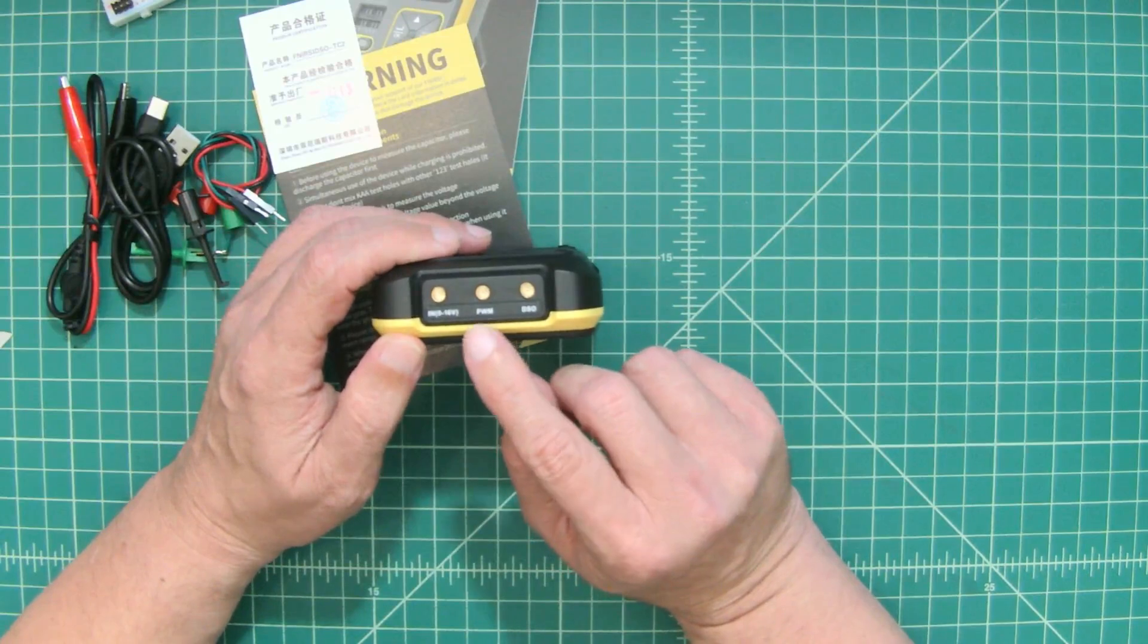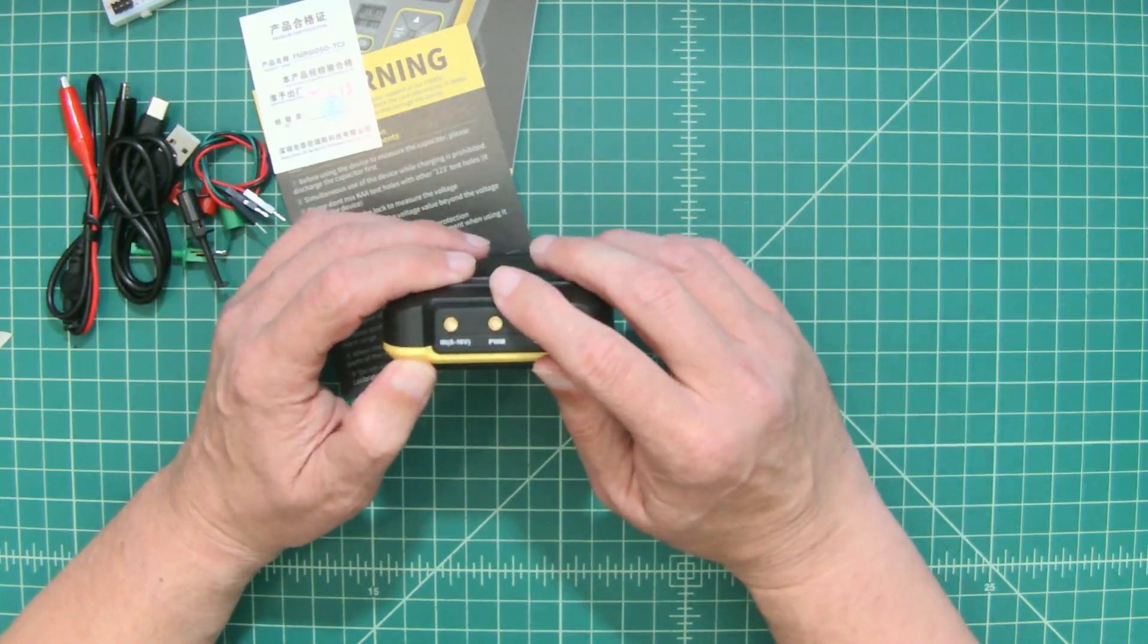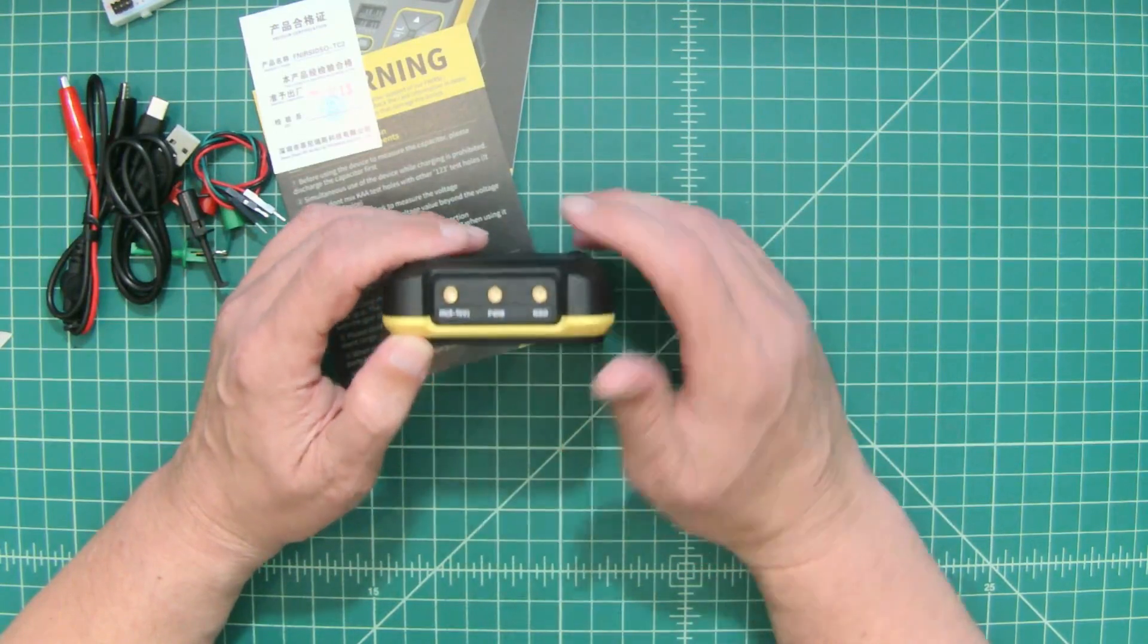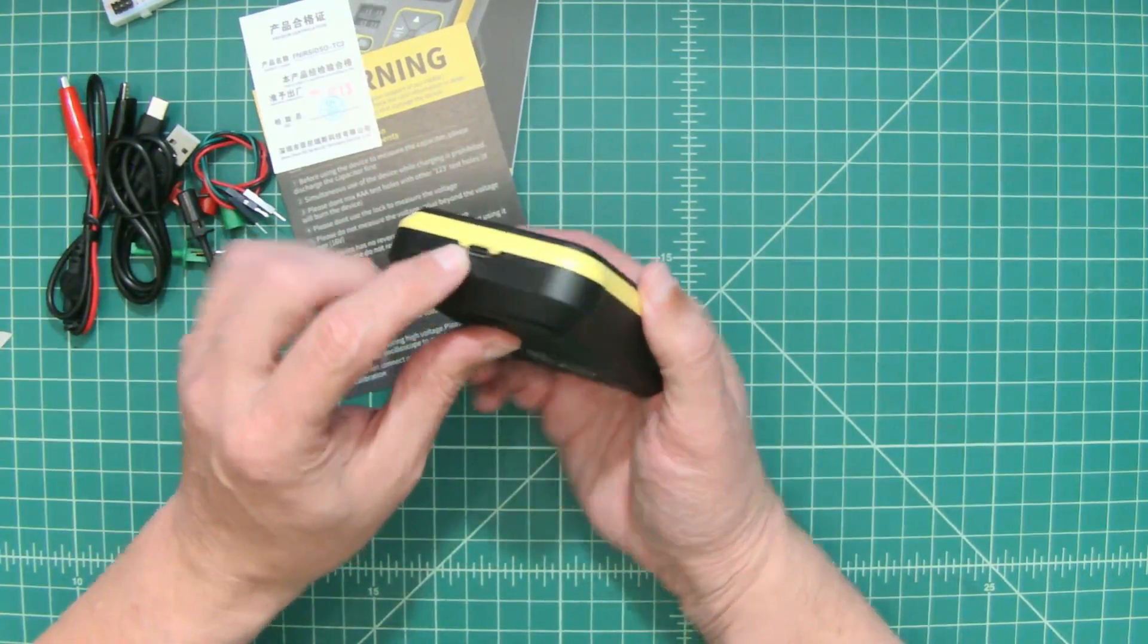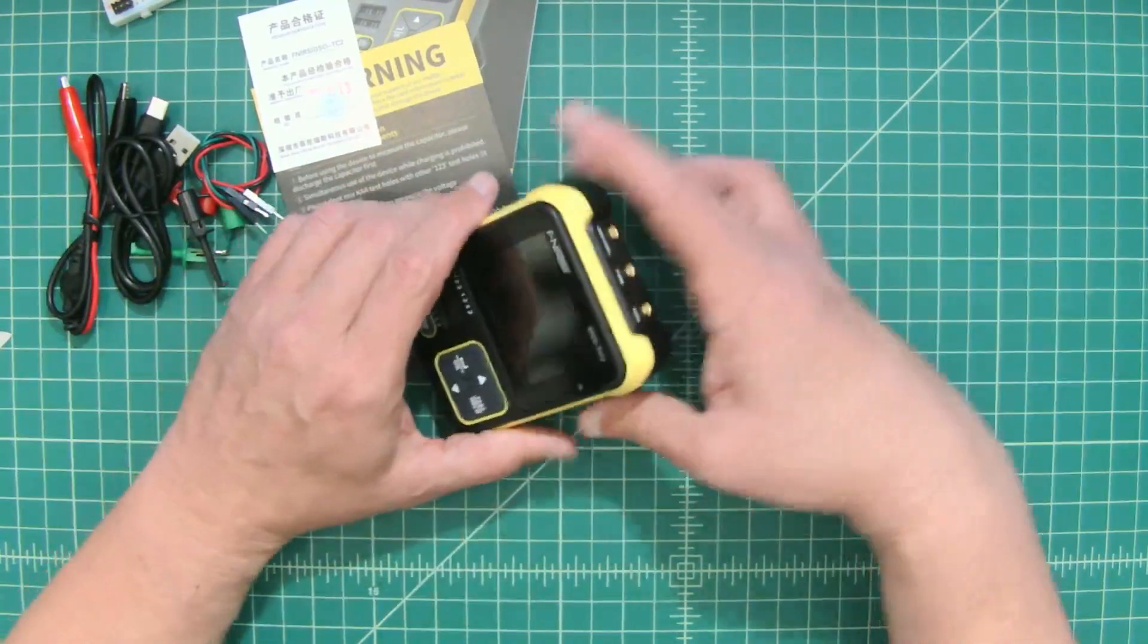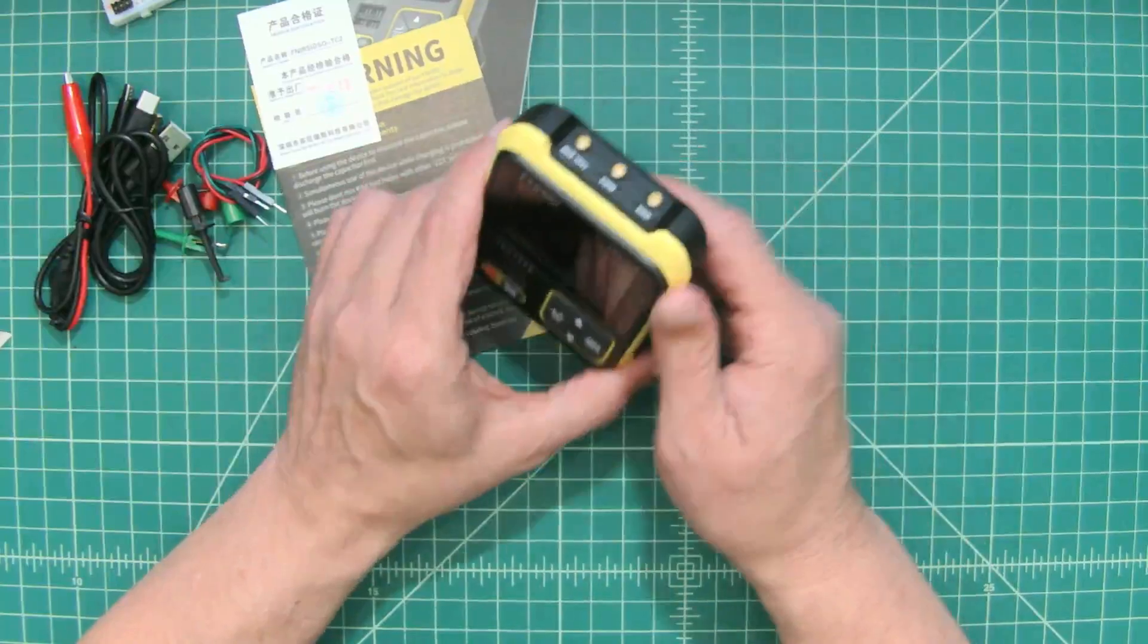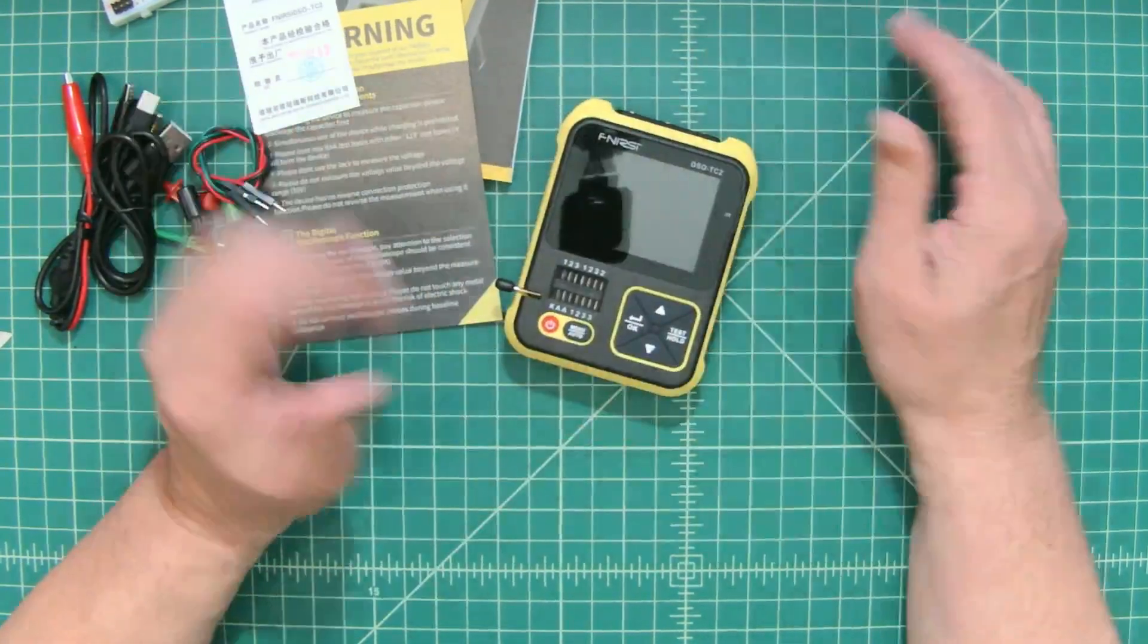you can see these MCX connectors, pulse width modulation. So I imagine this is an output signal. Here's your oscilloscope plug. This is 0 to 16 volts. Then here's your charging port on the bottom. It has a handy stand there. Actually it's a pretty nice angle for that stand. I kind of like it. Let's get it hooked up and do some testing.